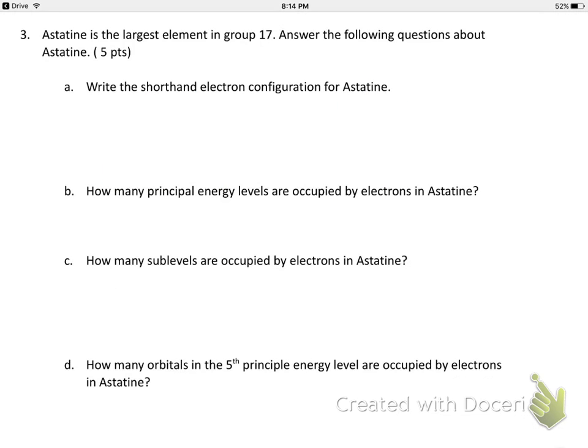Okay, so the next one is astatine is the largest element in group 17. So of course I'm going to pull out my periodic table, that's the first step. So group 17 is the halogens, the halide group, and astatine is AT. So it looks like it's element number 85. So I want to write the shorthand electron configuration. So I'm going to go back to the noble gas beforehand, which happens to be xenon, and then I'm going to trace it forward from there.